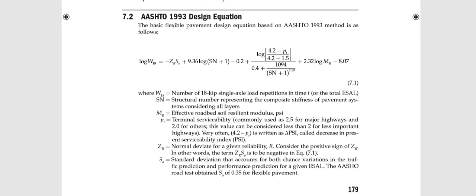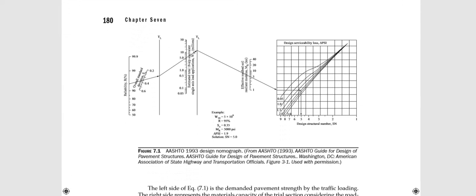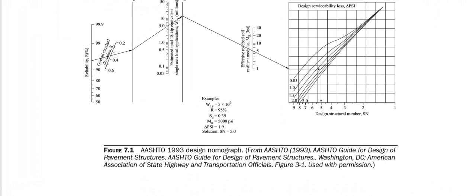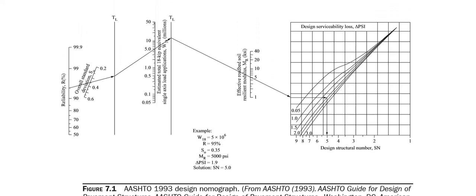That equation is very complicated, but there is a shortcut: the nomogram. This nomogram solves that equation graphically and is much simpler to use. Start from reliability — most pavements are designed for 90% reliability, though sometimes 98% is used. Standard deviation is commonly 0.35. Connect those values with a line on the nomogram to begin the process.